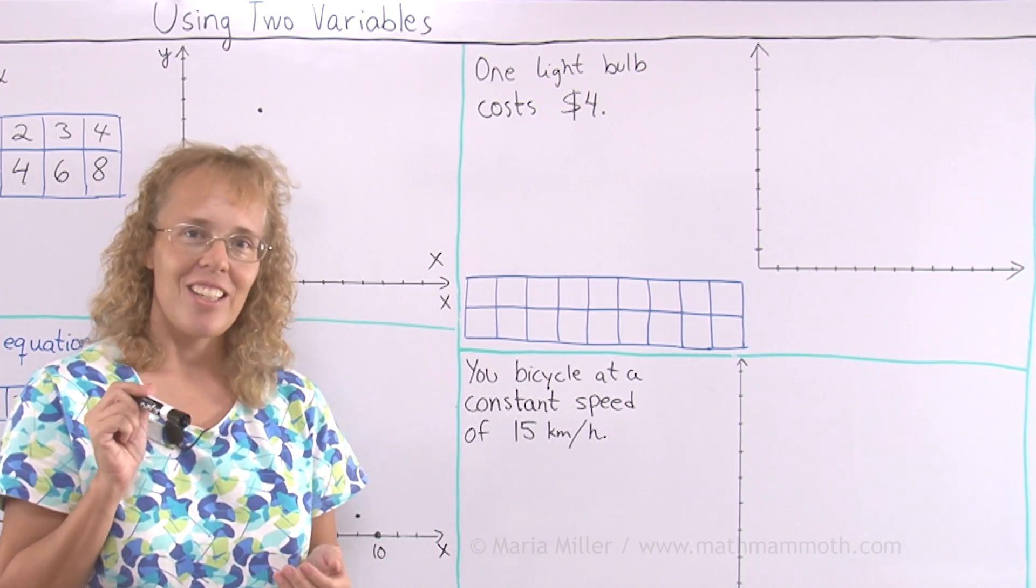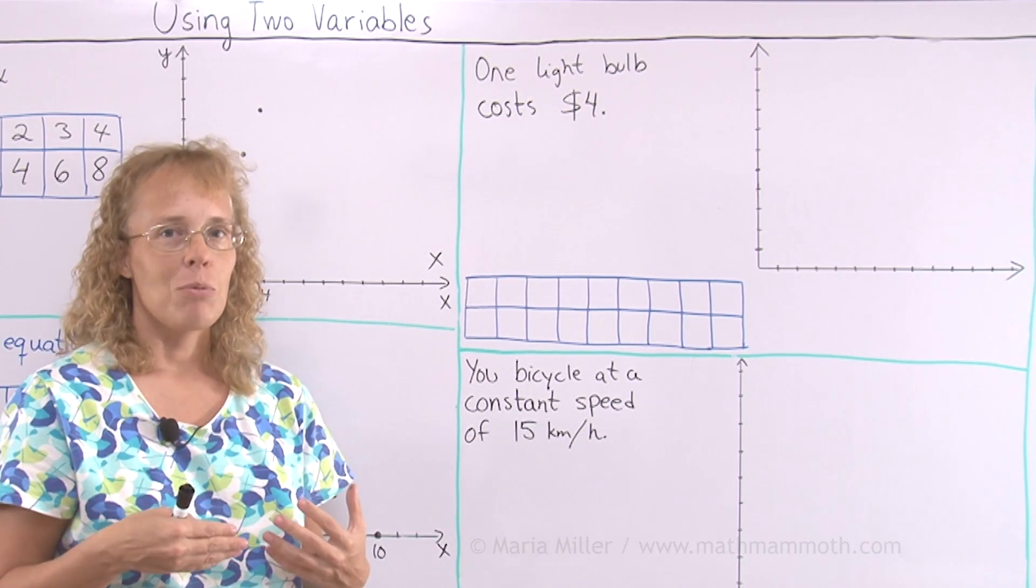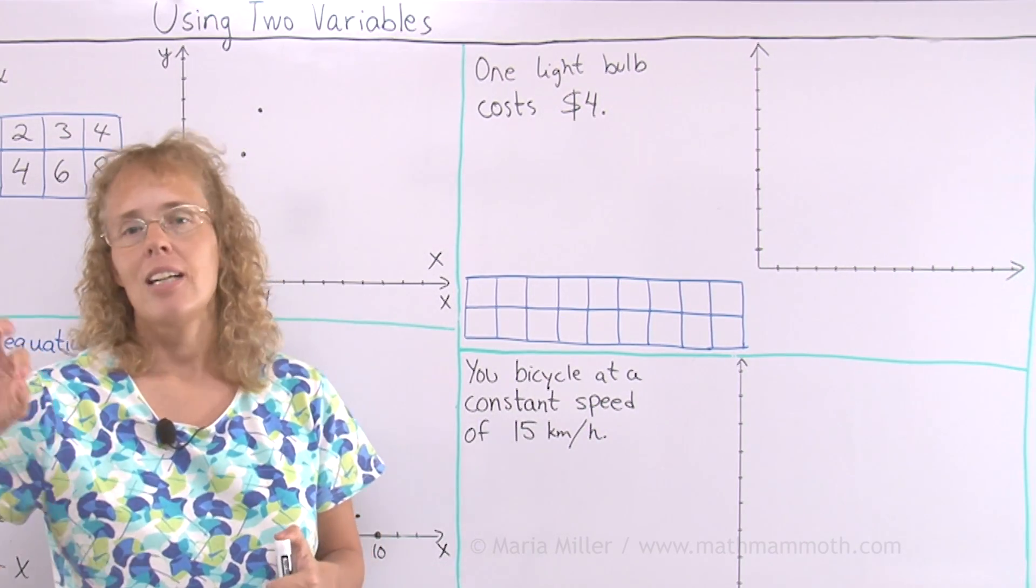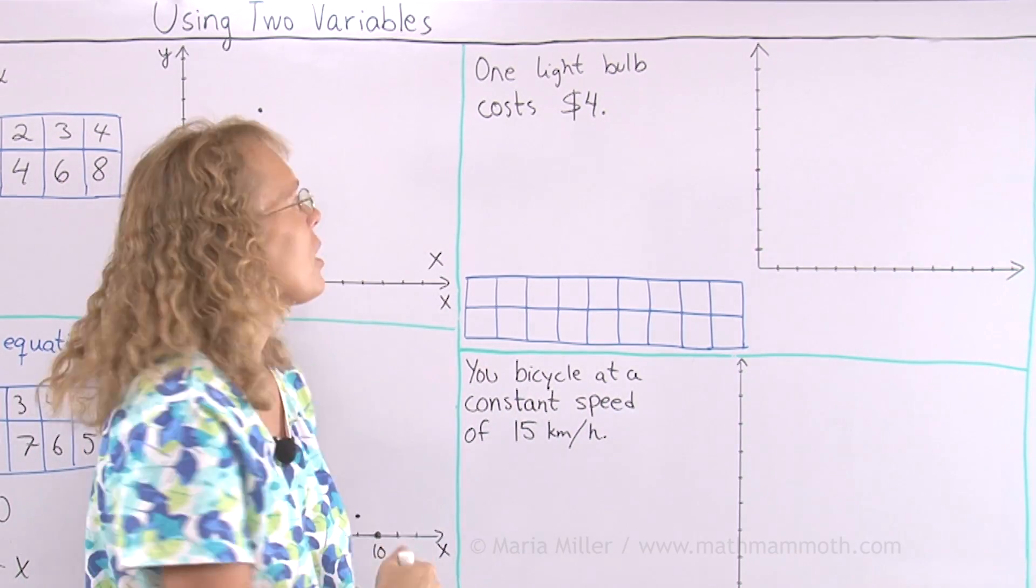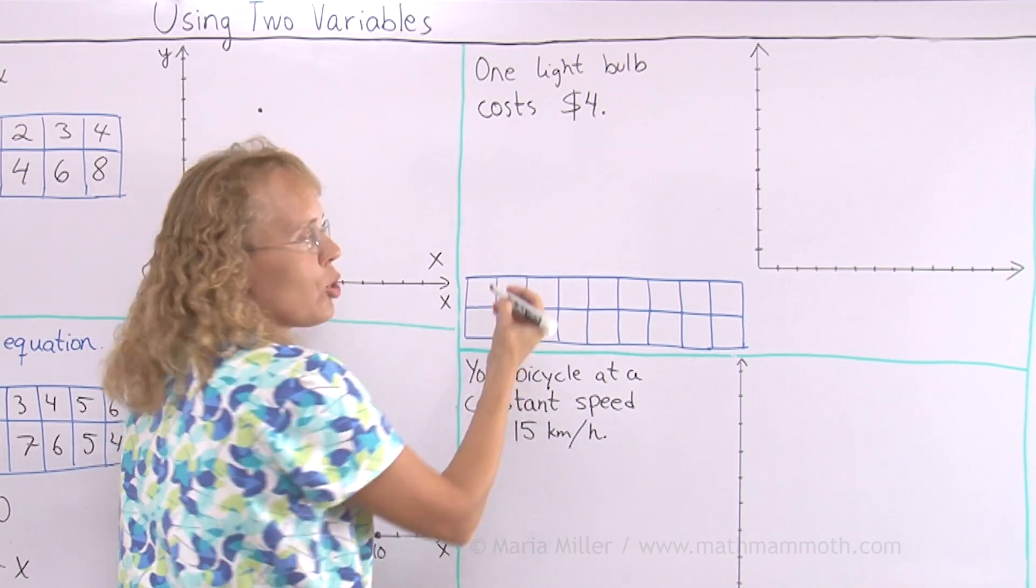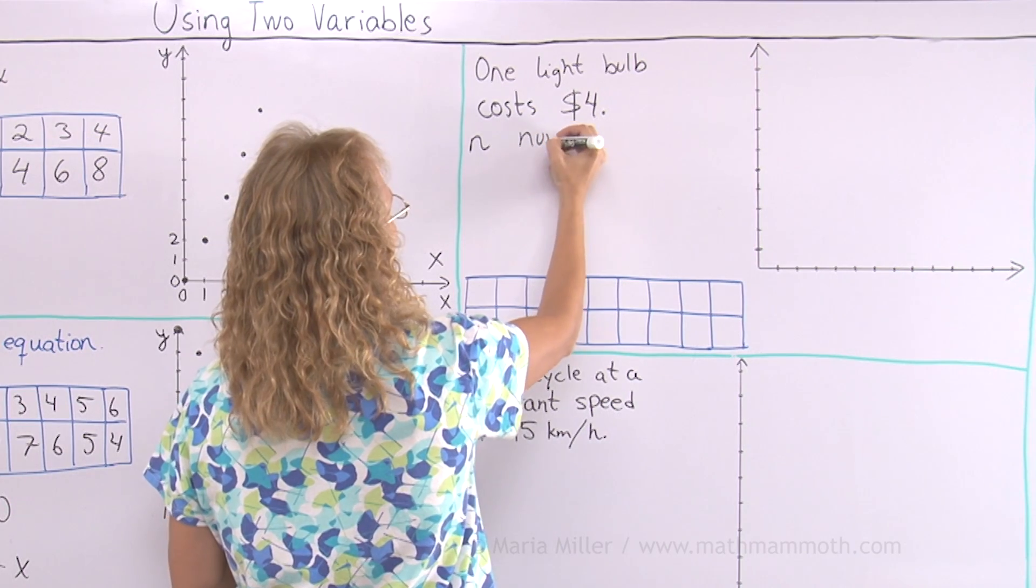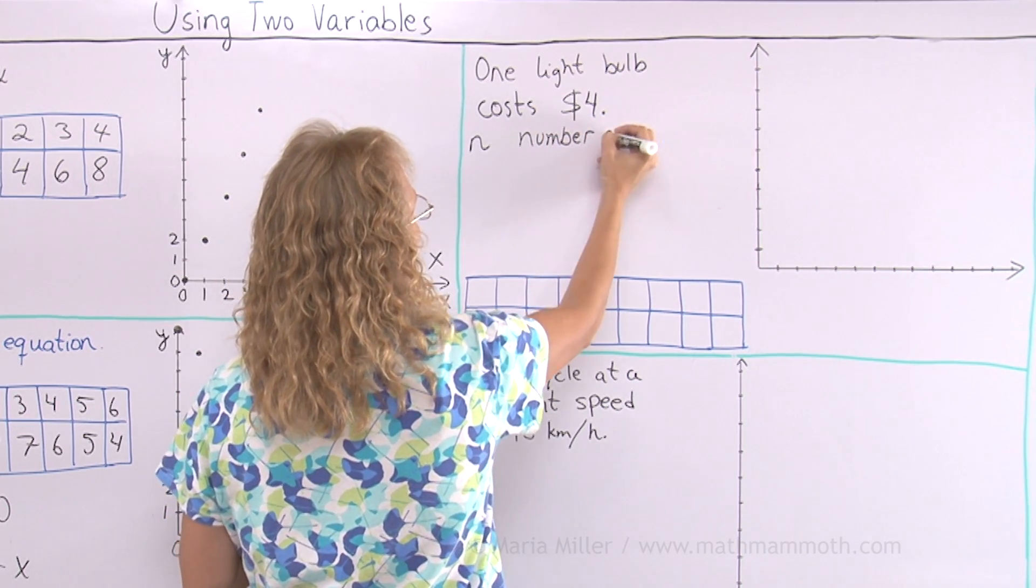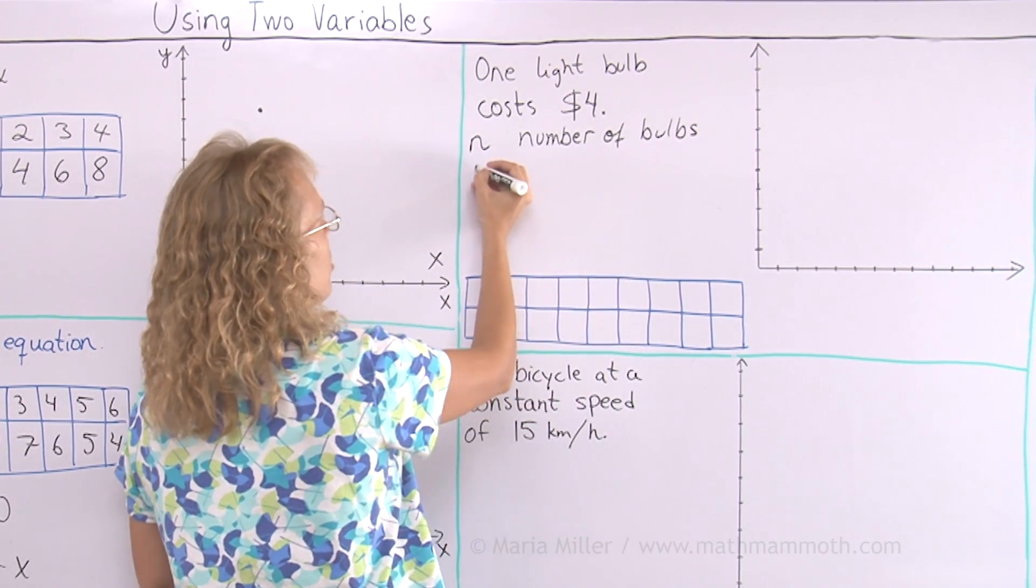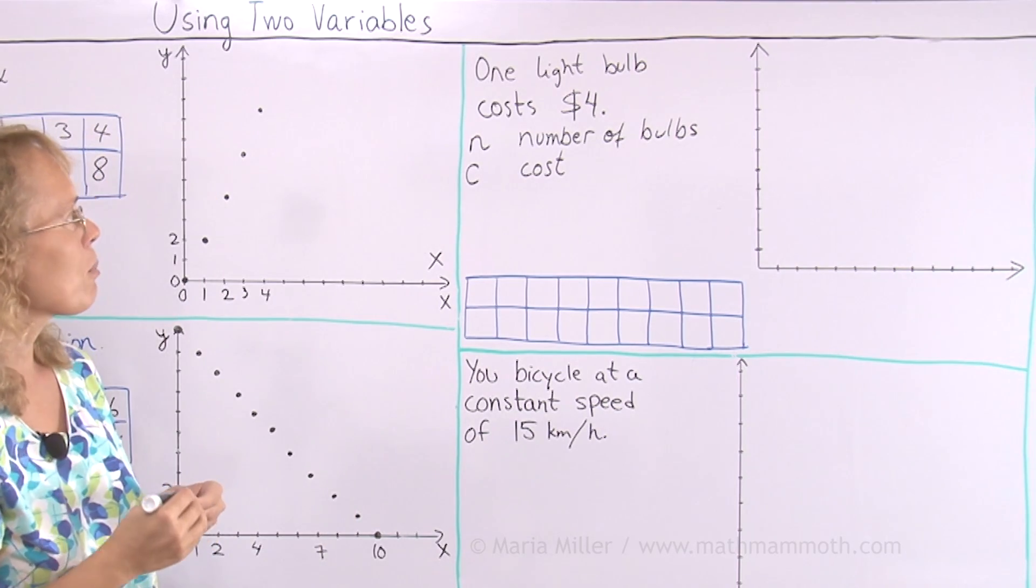Now the unknowns are here that let's say you buy several light bulbs. Then what will your cost be? The unknowns are how many light bulbs you buy and how much it will cost you. Two variables. So let me write here that number of light bulbs and let's choose a letter for that. N would be number of light bulbs, bulbs here. And then cost, well let's put C, is cost.